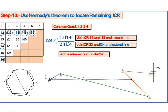To locate I24, join points 2 and 4 with a dotted line. Consider two triangles on either side of this common side 2-4: triangle with I12 and I14 on one side, and triangle with I23 and I34 on the other. Join the line through I12–I14 and extend it, and join I23–I34 and extend it.